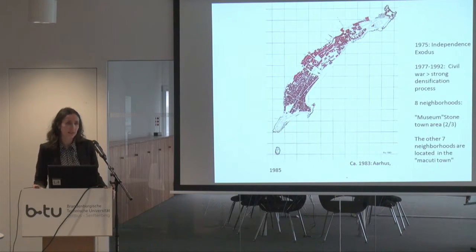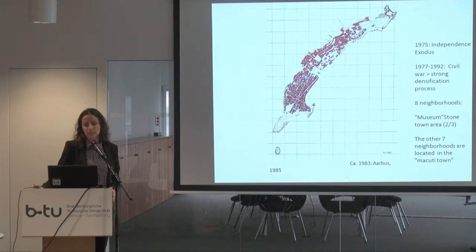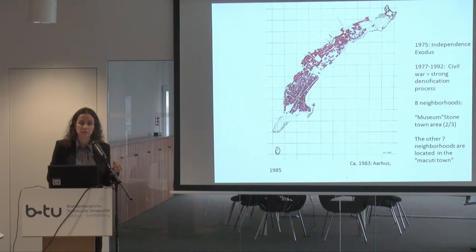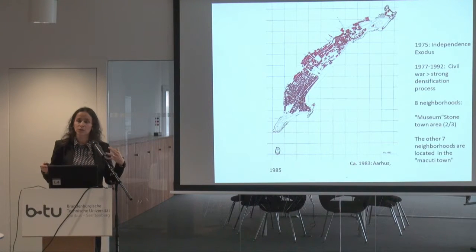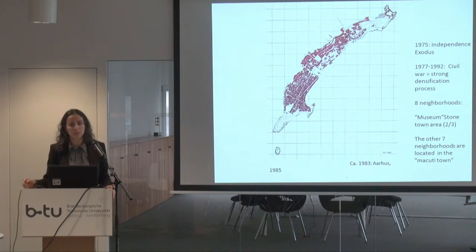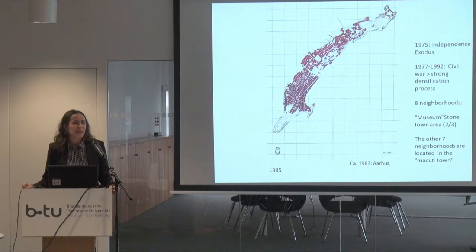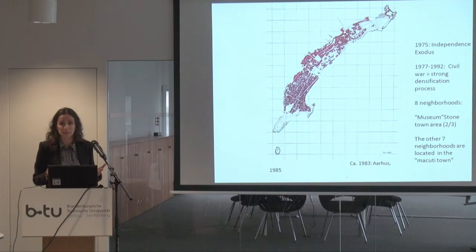In 1975 came independence, and there was a big exodus from all the colonies — all the Portuguese were compelled to leave the country. The stone city began to receive some people from the Makuti town who moved into the stone buildings, but not all, because some of the most important buildings became government property. The people didn't know how to maintain these buildings and it was not financially possible, so most of the people preferred to stay in the Makuti town.